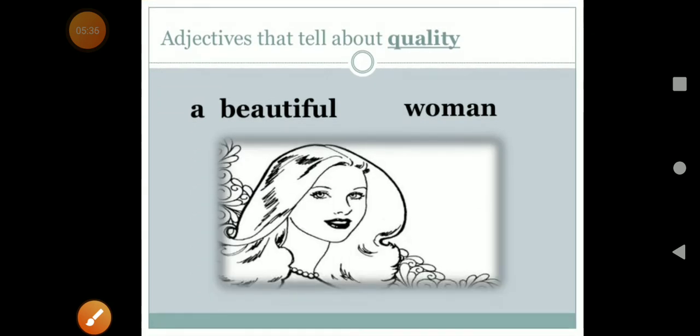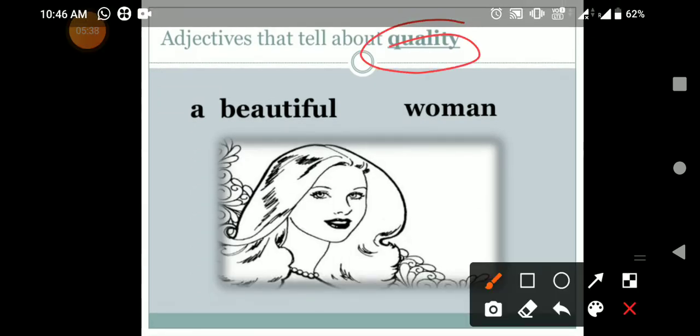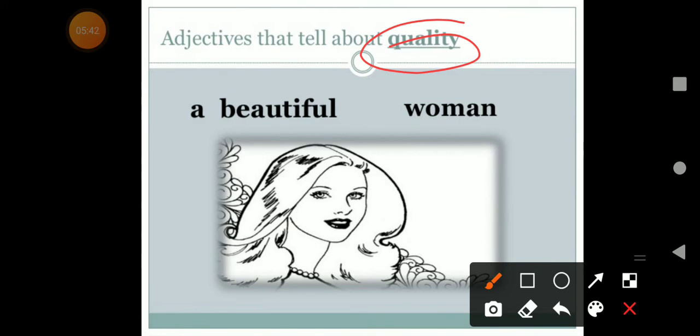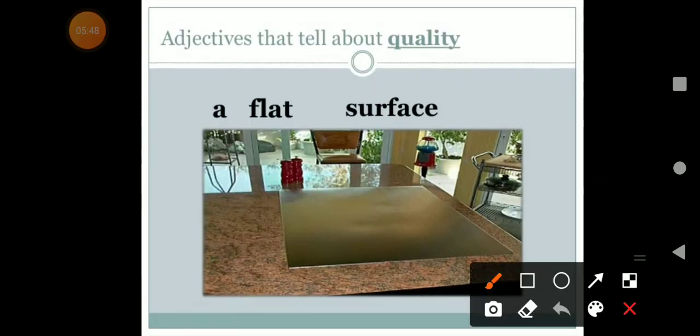It will also tell us about the quality. Like they say, quality means, like she is a beautiful woman. So woman is a noun and beautiful is an adjective. Next, surface is a noun and flat is an adjective.